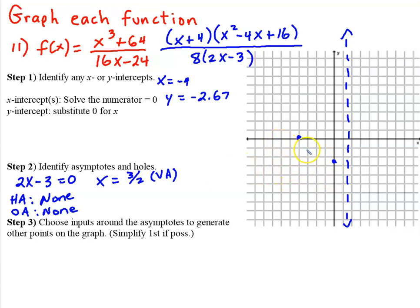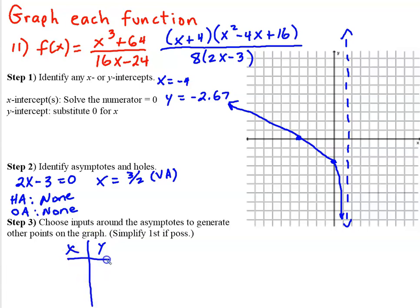On the left side of the vertical asymptote, we know we're not crossing the x-axis anywhere except at x = -4, so we can connect the x-intercept at -4 with the y-intercept at -2.67, and the curve approaches the vertical asymptote going toward negative infinity. On the right side, let's try x = 2: 2³ + 64 = 72, divided by 2(2) - 3 = 8 − wait, 8 − 3 = 5... that gives 72 over 1 = 72... let me check: 4 - 3 = 1... actually 2(2) = 4, minus 3 = 1. Actually using the original denominator: 8(2) - 12 = 4, giving 72/4 = 18. The point (2, 9) is on the graph.